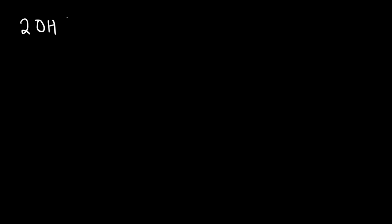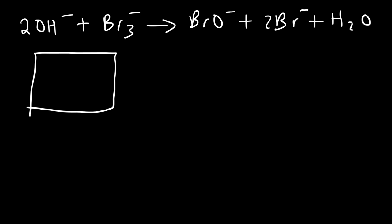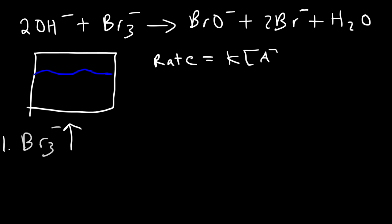Now consider this reaction. Let's say that hydroxide reacts with the tri-bromide ion to produce the hypobromide ion, two bromide ions, plus H₂O — all dissolved in water. What's going to happen if we increase the tri-bromide ion concentration? What's going to happen to the rate constant and the rate of the reaction? The rate of the reaction depends on the rate constant and the concentration of the reactants.